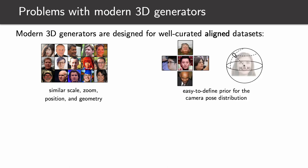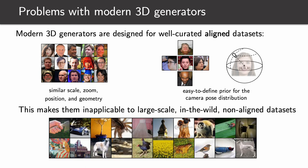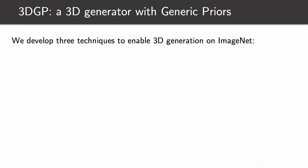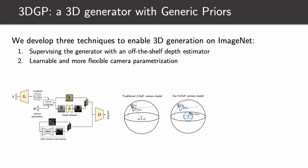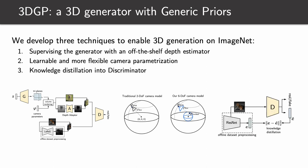Next, they use overly simplistic assumptions about the camera pose distribution, and this makes them inapplicable to modern large-scale in-the-wild datasets like ImageNet. To enable 3D synthesis on complex in-the-wild datasets, we develop three techniques: first, we propose to supervise the generator with an off-the-shelf monocular depth estimator; next, we develop a more flexible camera model with a learnable distribution over its parameters; finally, we design a simple and cheap technique of distilling knowledge from a pre-trained feature extractor into the discriminator.